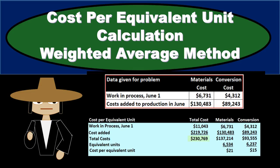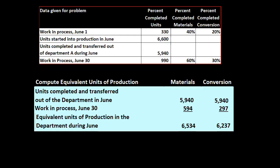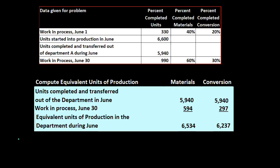In this presentation we will calculate cost per equivalent unit using the weighted average method. Last time we computed equivalent units of production for materials and conversion. We're going to use this information now to apply out the actual costs.